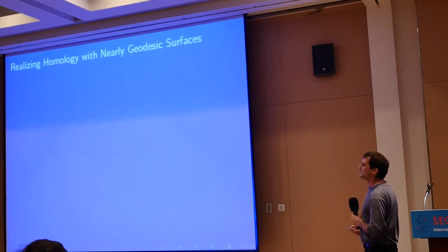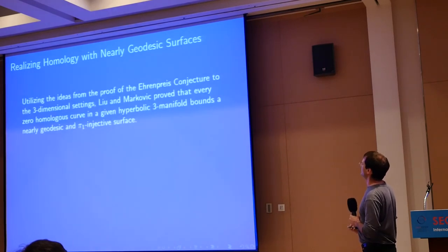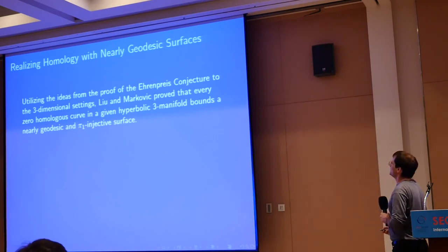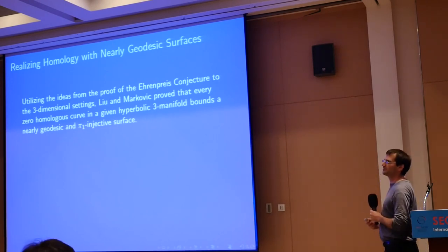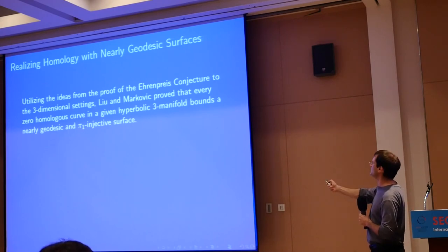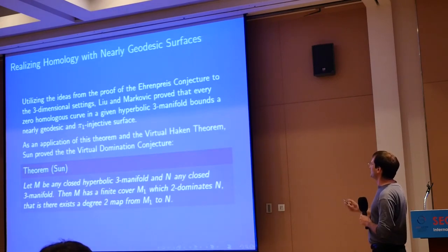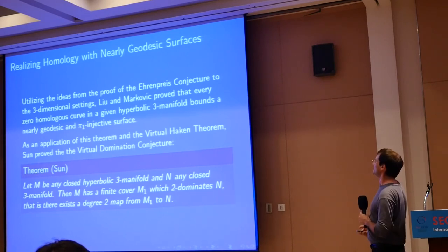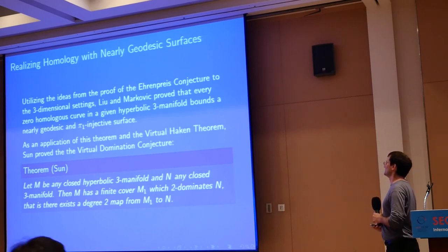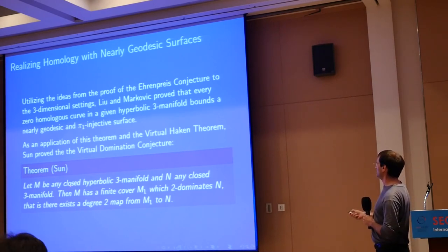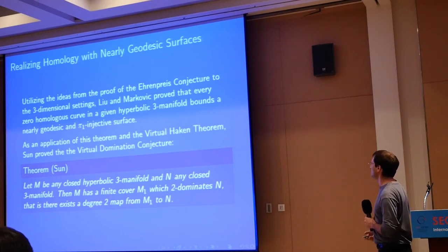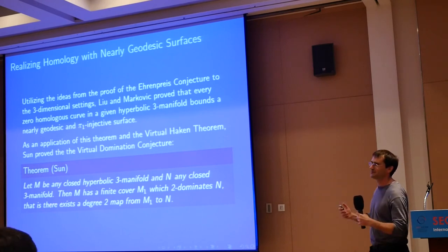We can do the same in three dimensions. Kahn and Markovic showed that if you have any zero-homologous curve, it bounds a nearly geodesic and pi-1 injective surface using good pants homology in three dimensions. As an application, Hongbin Sun proved the virtual domination conjecture: every closed hyperbolic three-manifold has a finite cover which maps with positive degree to any other three-manifold.